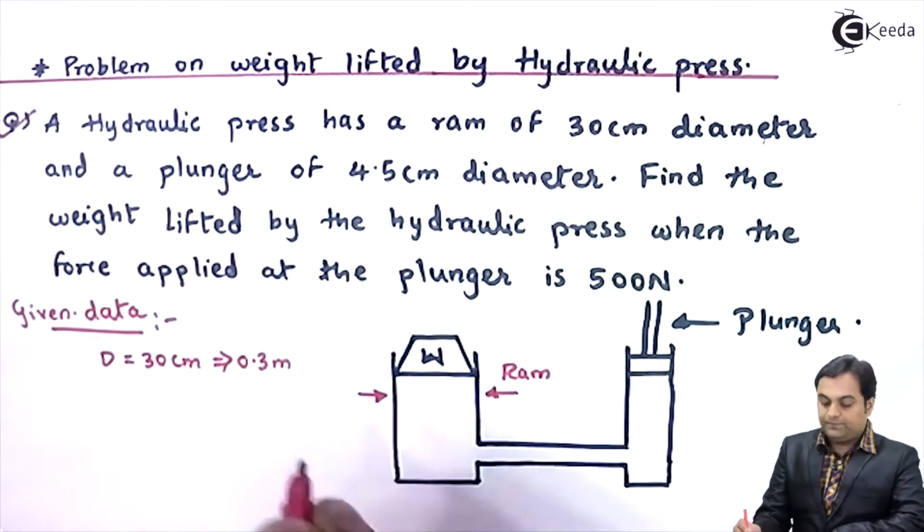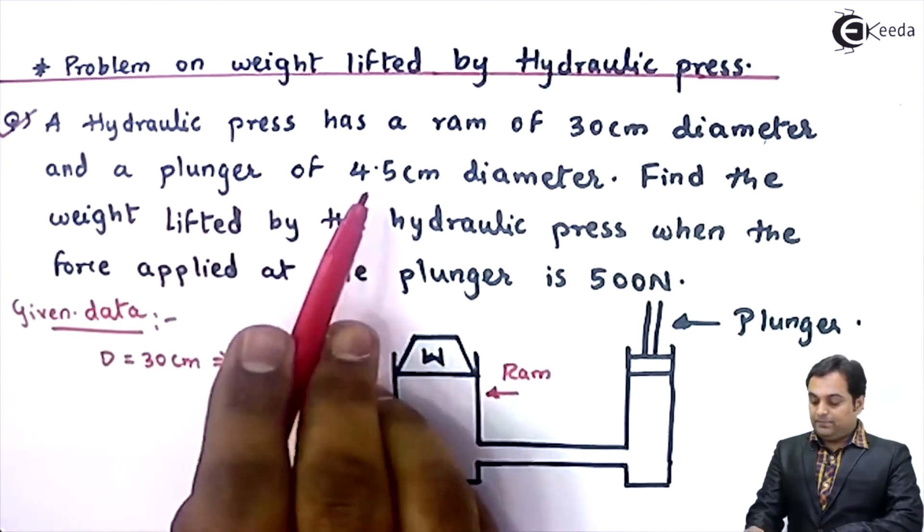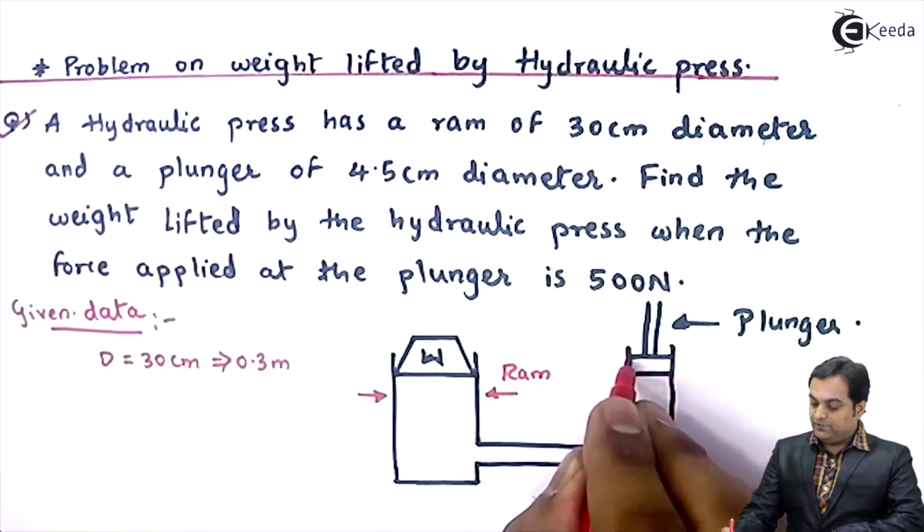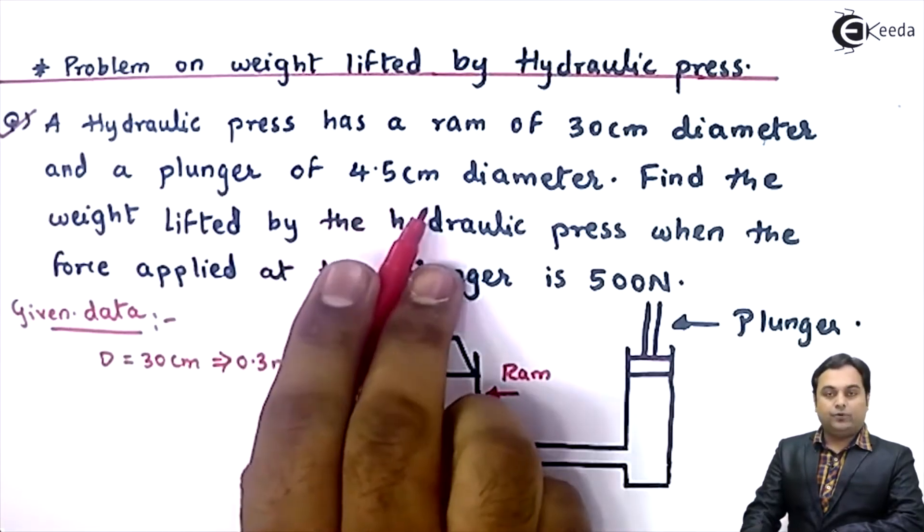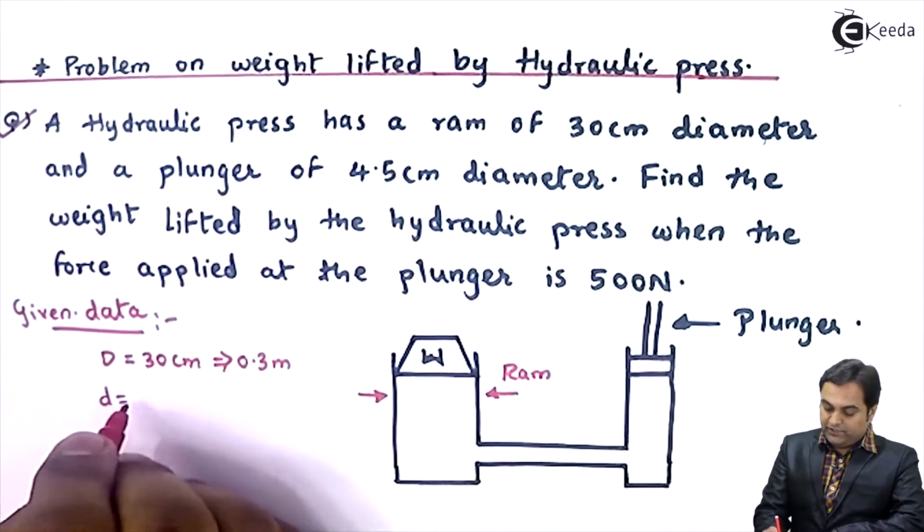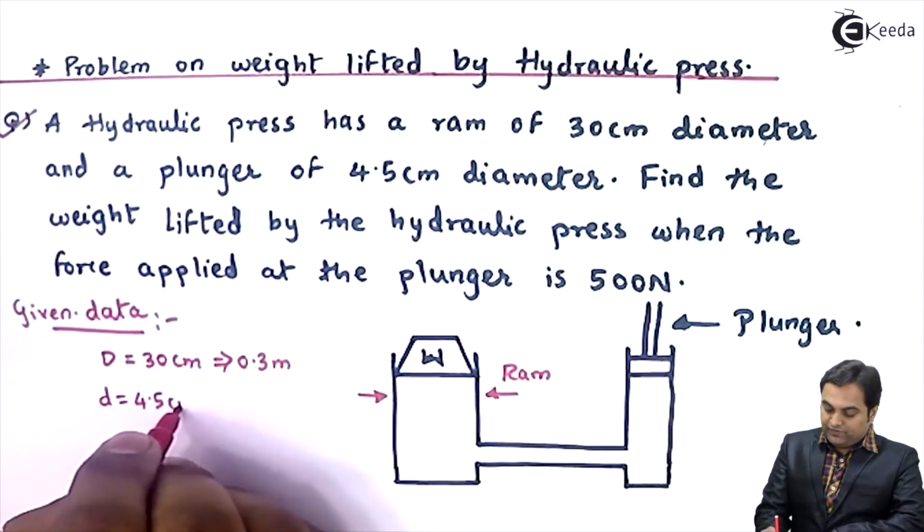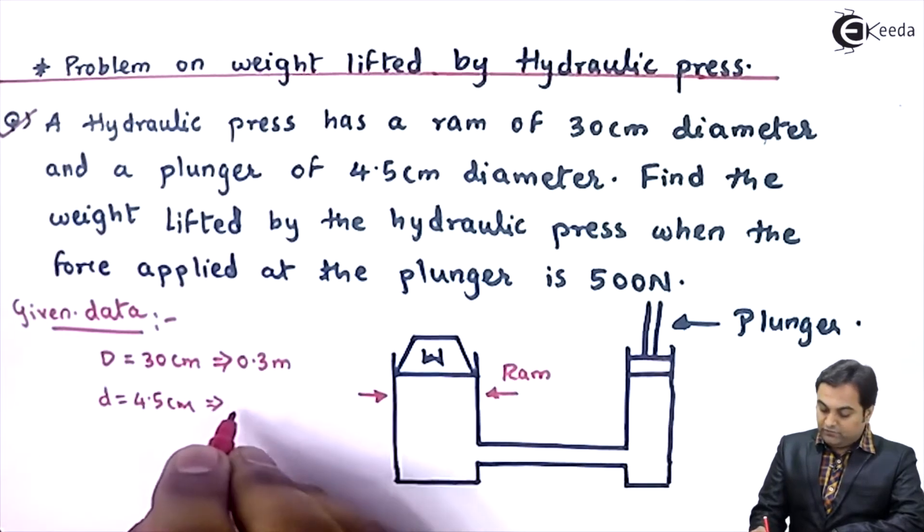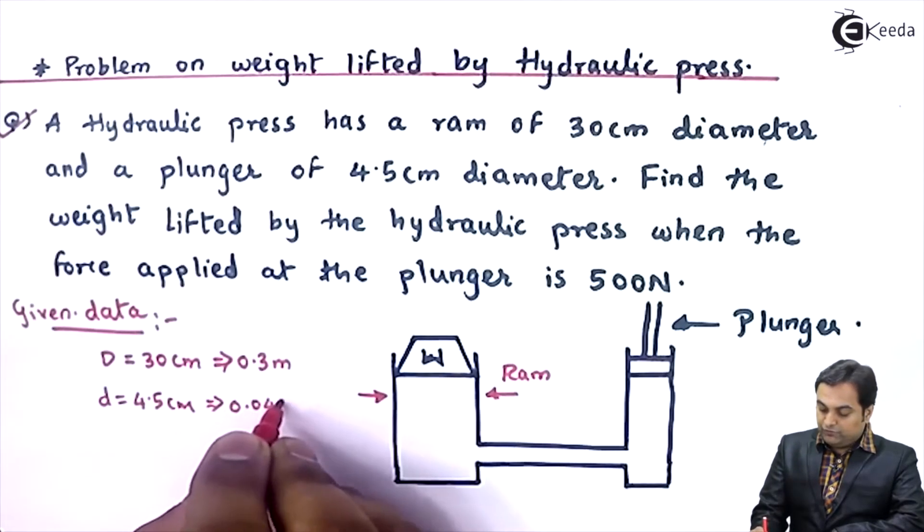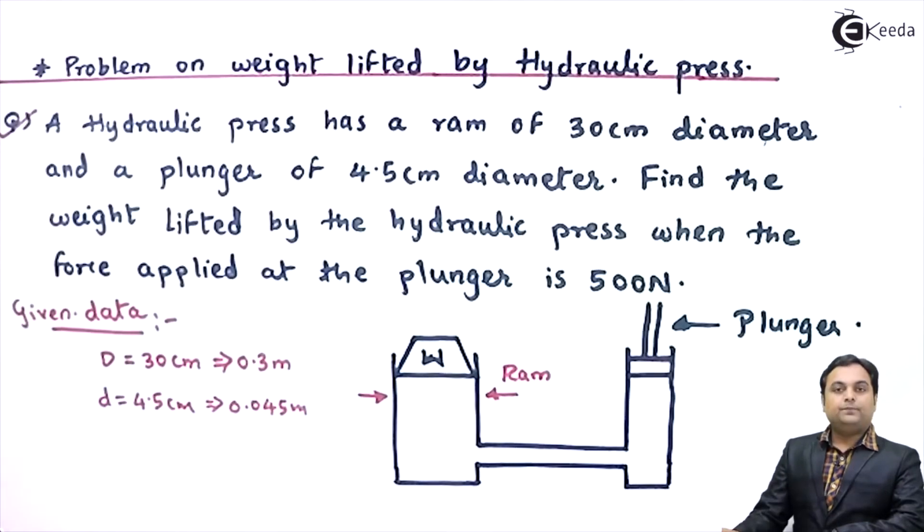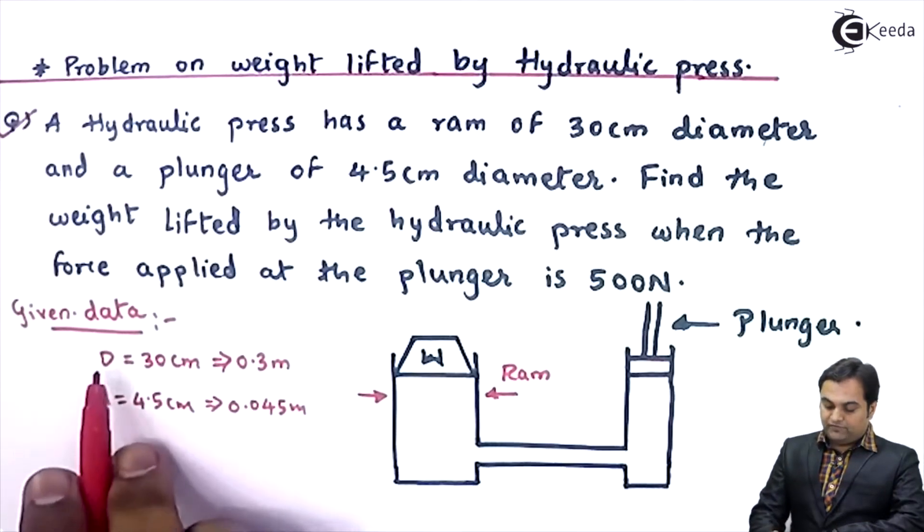And there is a plunger, this end is the plunger. Here we have the diameter of the plunger given as 4.5 centimeter. So small d, this is 4.5 centimeter, and that will be equal to 0.045 meters.